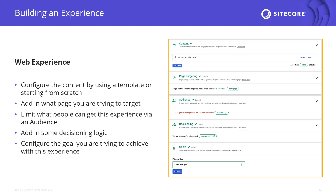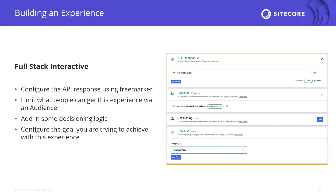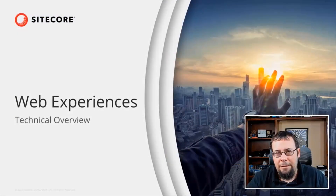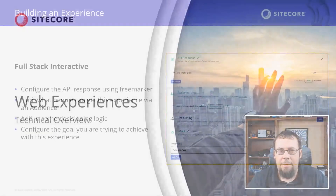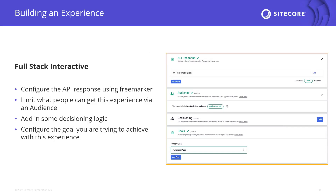Moving to the interactive experience UI, the main difference you see here is the API response. You can edit the response using FreeMarker JavaScript templates — our development advocates team has recorded sessions explaining how to use FreeMarker to build Sitecore Personalize templates. You can also configure audience filters, decisioning, and goals for the experience.